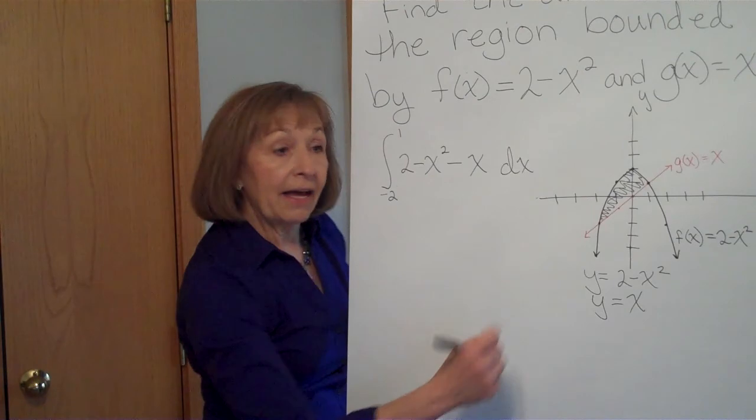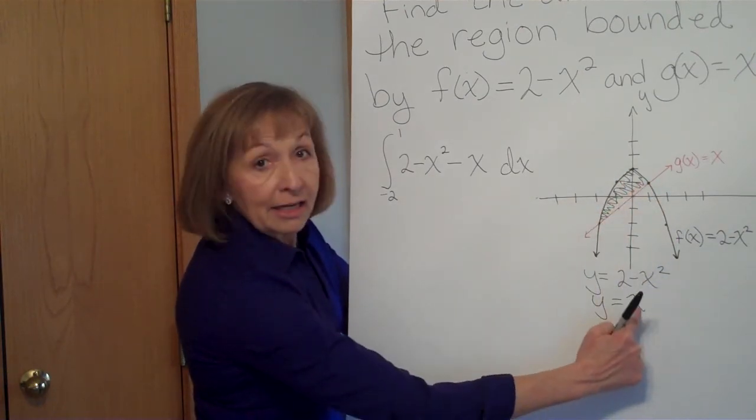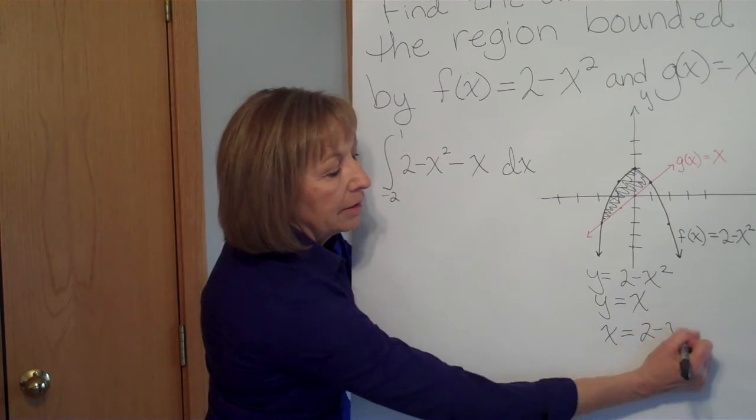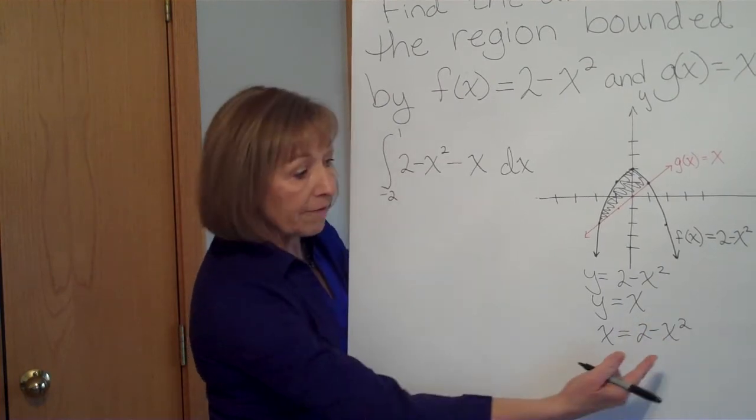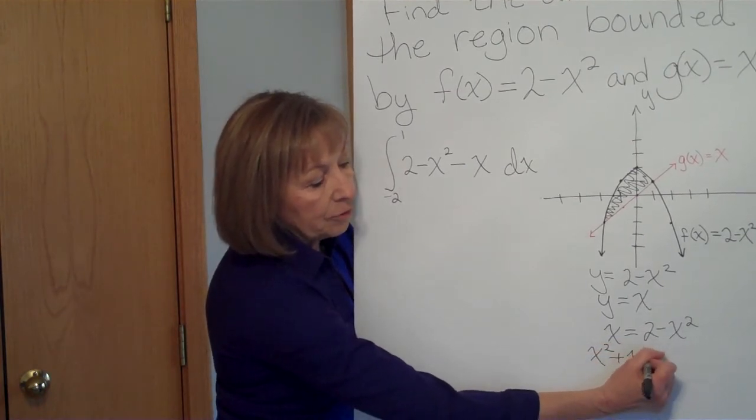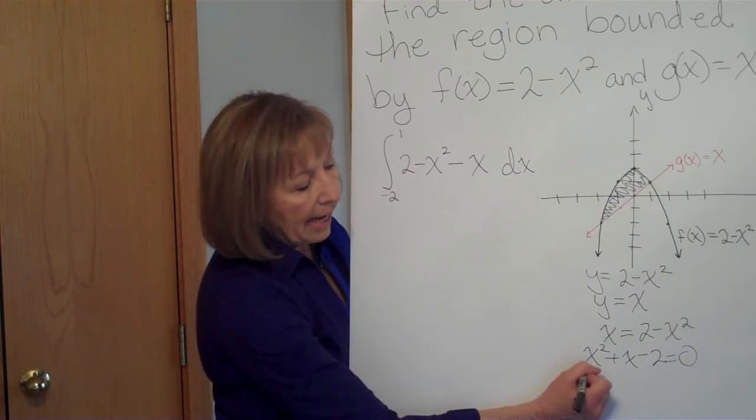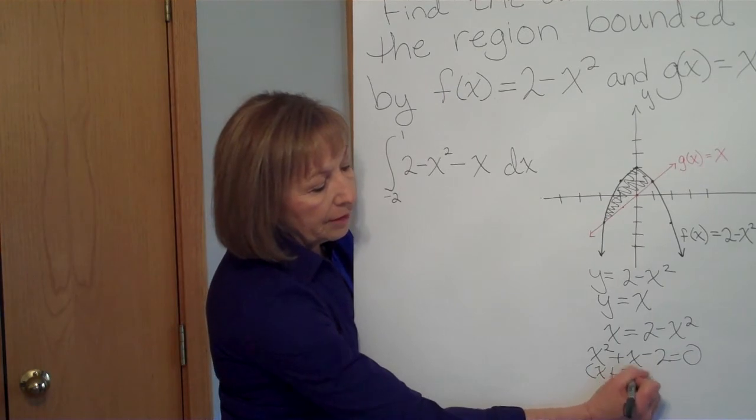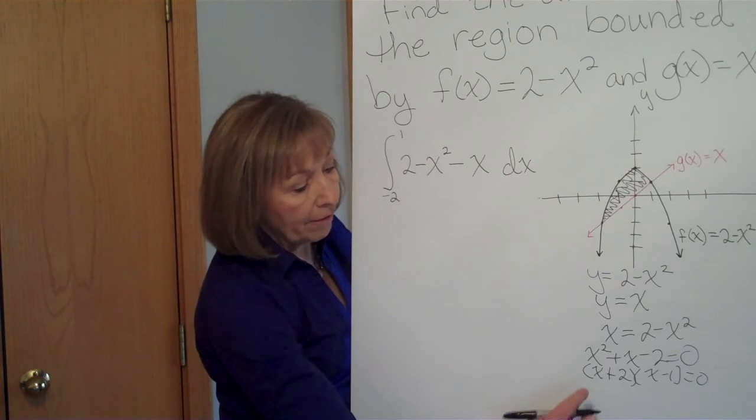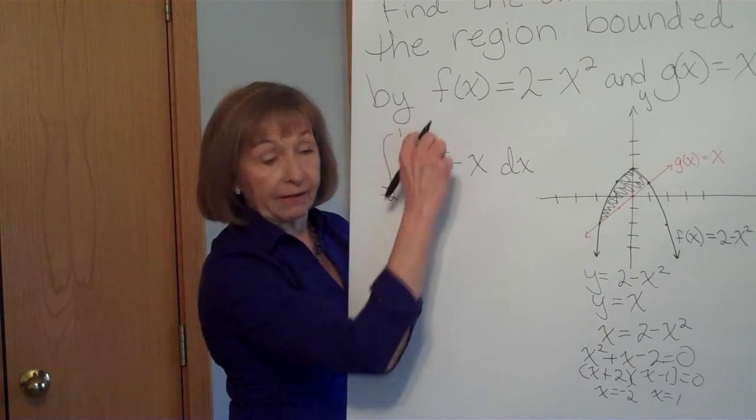So to find the x values at the points of intersection, we're just going to substitute the expression in for its equivalent. So we can put x in for y, and then solve that equation. It's quadratic. We'll add the x squared and subtract the 2 from both sides to get it set equal to 0. And we factor this, that's x plus 2 times x minus 1. And we get the x values of x equal negative 2 and x equal 1, which we already found out.